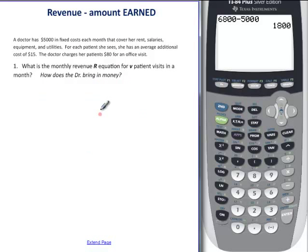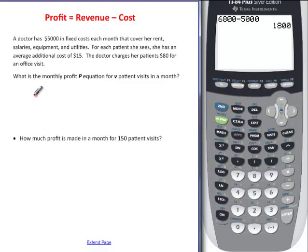Alright, now let's talk about some terms here. Revenue is considered the amount that you earn, the money you bring in. So they're asking us what monthly revenue for V patients in a month. That's where this last sentence, we finally get to this last sentence, says doctor charges $80 per office visit. So revenue is going to be equal to $80 per visit. That's how they bring in money is by charging the patients.